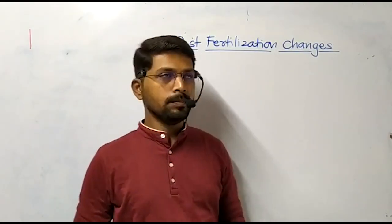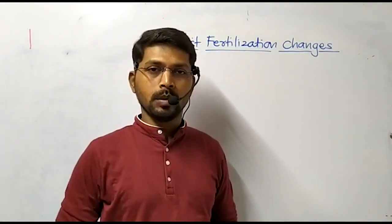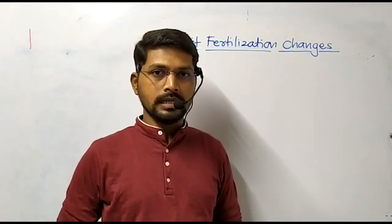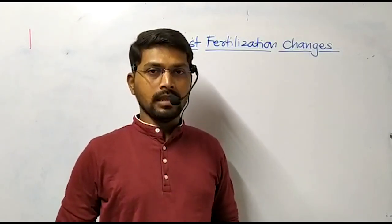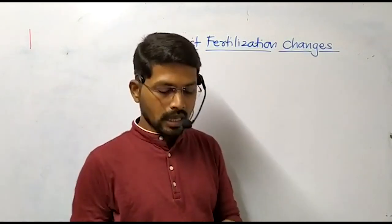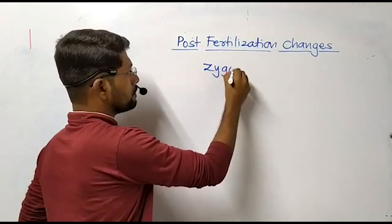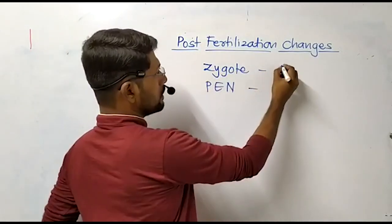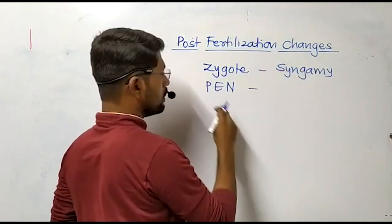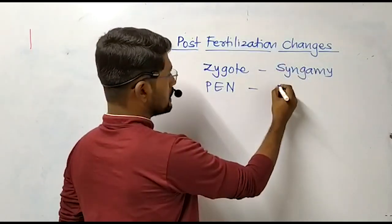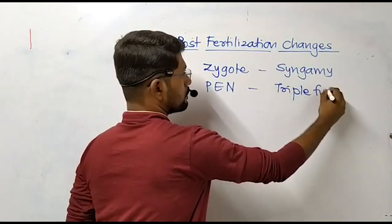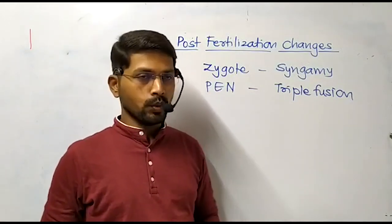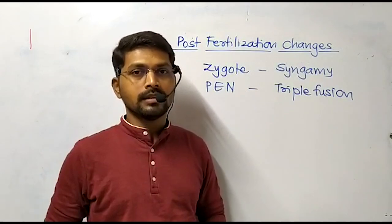Dear friends, let us discuss the post-fertilization changes occurring in angiospermic plants. In our previous lectures, we discussed the mechanism of double fertilization and the outcome of double fertilization in angiosperms — two different things. The first is called the zygote and another is called the primary endosperm nucleus, where the zygote is the outcome of syngamy and the primary endosperm nucleus is the result of triple fusion. In this lecture, we are going to discuss the development of endosperm as well as embryo from the primary endosperm nucleus and zygote respectively.